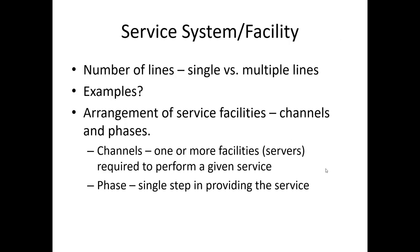When we talk about the system, we move from customer population attributes into what the system looks like. Waiting lines involve two big components: what happens on the customer side and what happens on the system side — and what's cool is seeing how they interact. From the system side, key attributes include number of lines, whether single or multiple, and how they're arranged. Is there one or more servers? Is there one or more steps, or phases? Phases mean steps, channels mean servers.